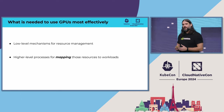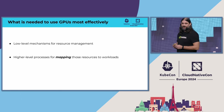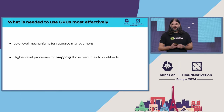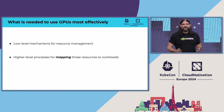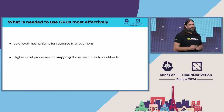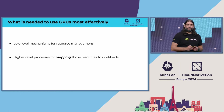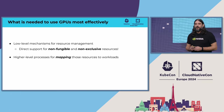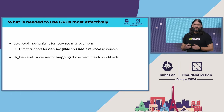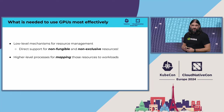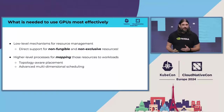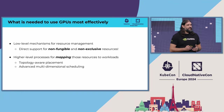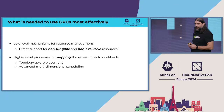This includes changes to both the low-level mechanisms used to request access to GPUs, as well as the higher-level processes needed to map a set of GPUs to a workload based on its requests. The biggest change in terms of resource management will be direct support for non-fungible and non-exclusive resources at the node level. And the changes at the higher layers will take the form of things like topology-aware placement strategies and advanced multi-dimensional scheduling.